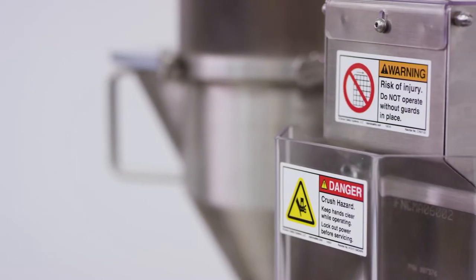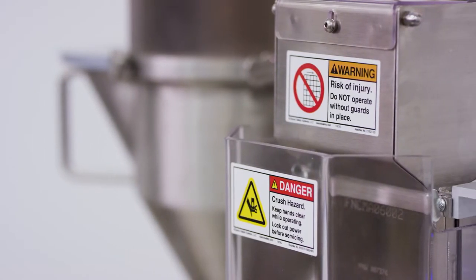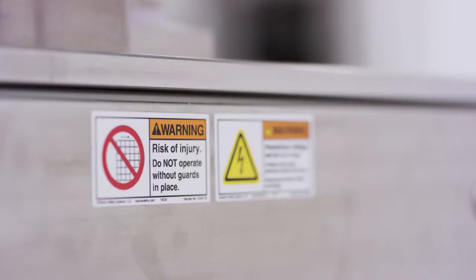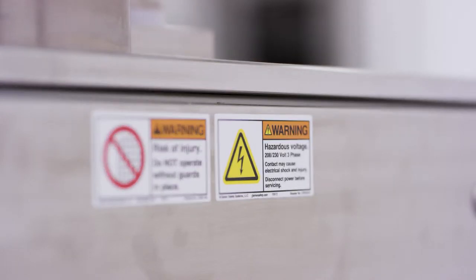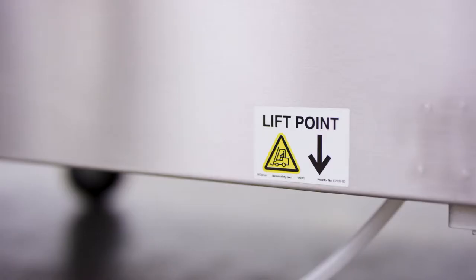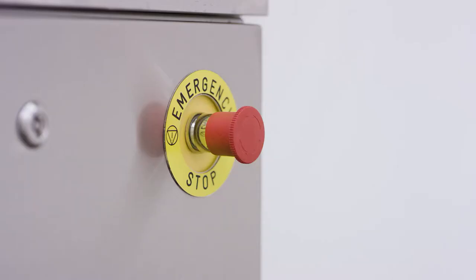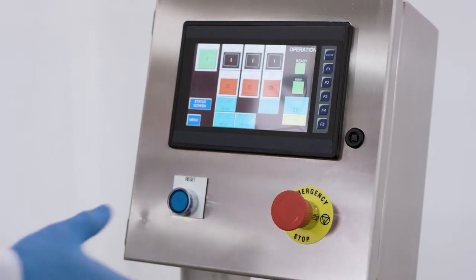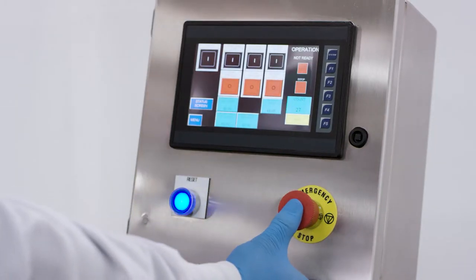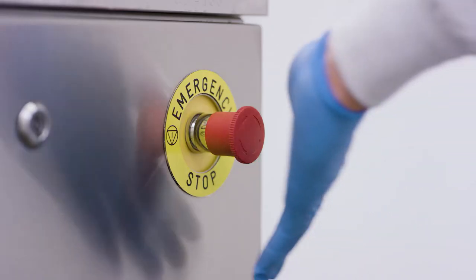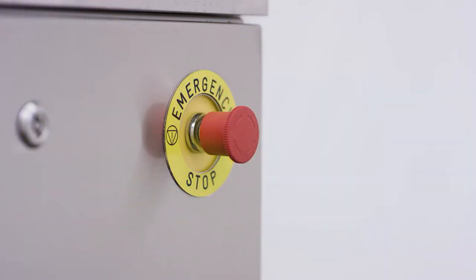When operating any machine, safety is of the utmost importance. Please read all warnings and instructions on the machine and in the operation manual prior to using the machine. There are two emergency stop buttons, one located on the front of the machine on the HMI unit and one on the back panel. Pressing either of these at any time during the operation of the machine will immediately shut down all processes.